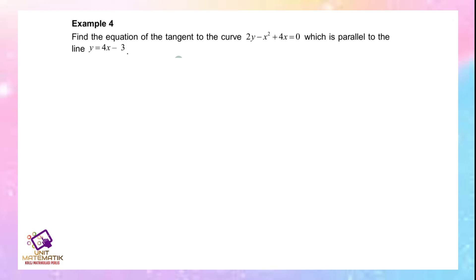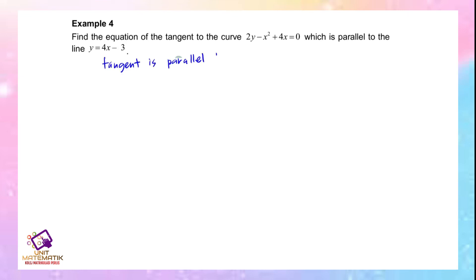Example 4: Find the equation of the tangent to the curve 2y - x² + 4x = 0 which is parallel to the line y = 4x - 3. To find the equation we need a gradient and a point. Since the tangent is parallel to y = 4x - 3, the gradients are equal, so m = 4.